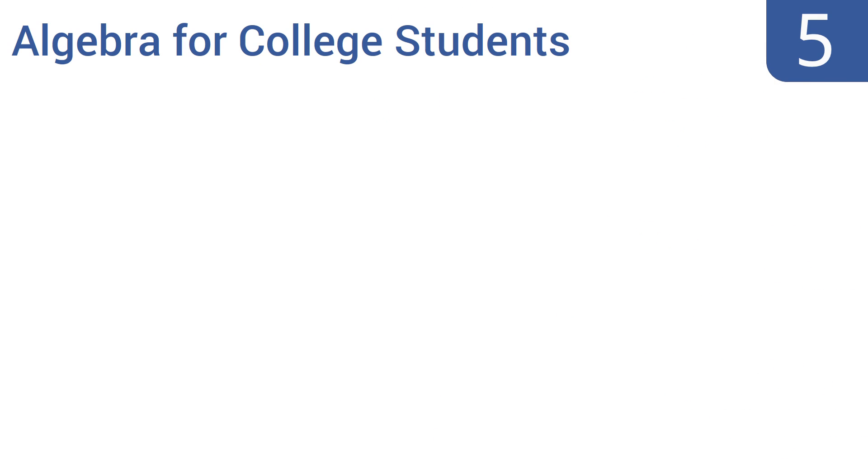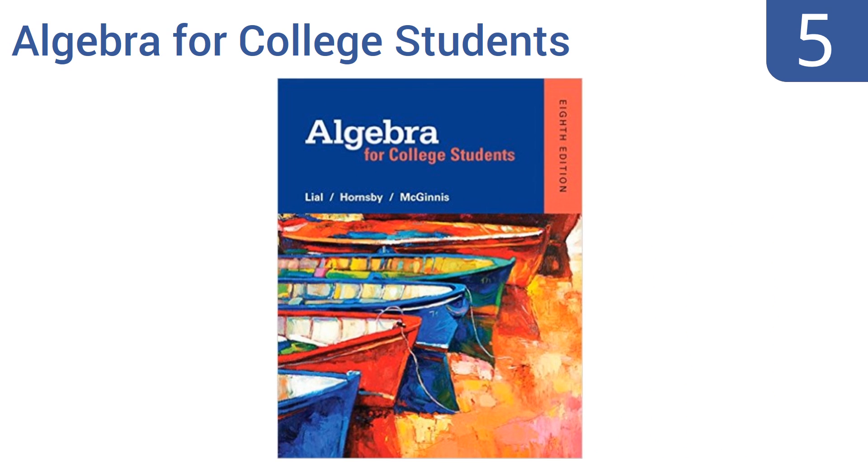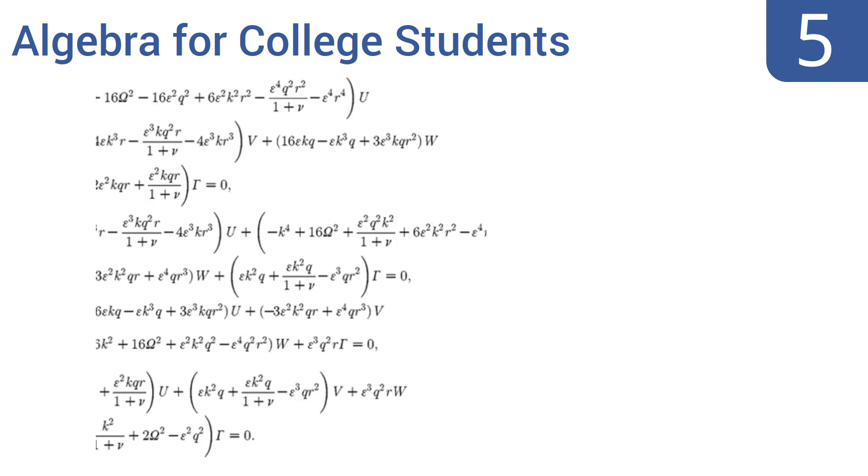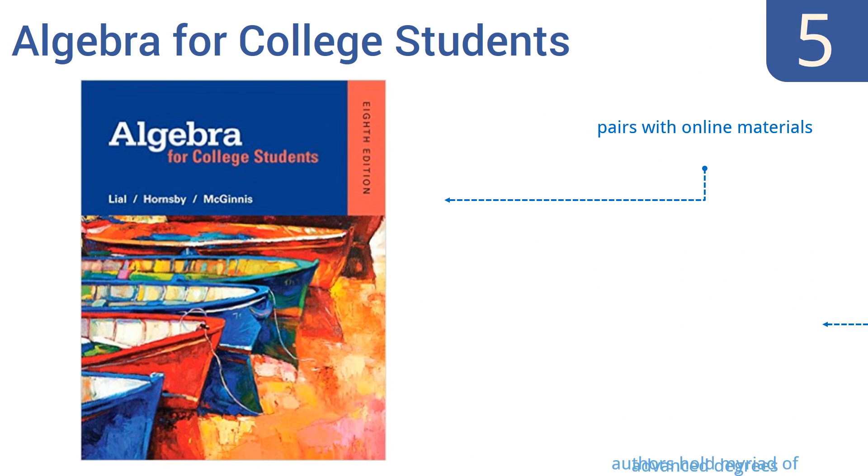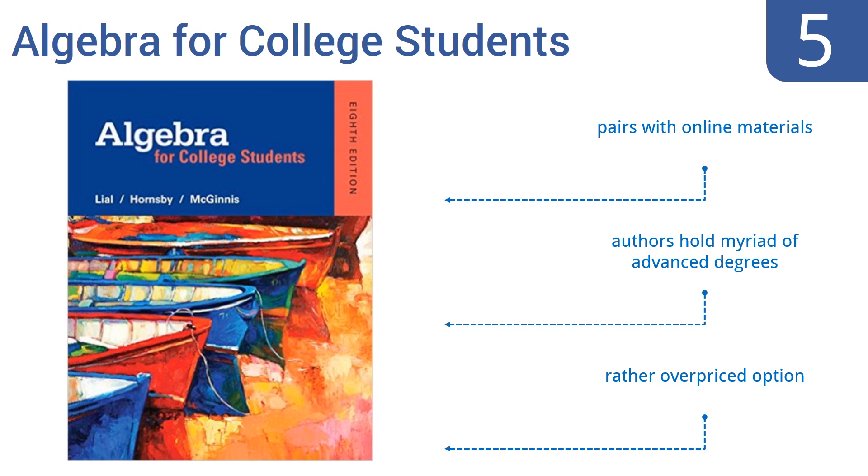Coming in at number 5 on our list, it will come as no surprise that the textbook Algebra for College Students 8th edition takes its user on a path through the more advanced levels of algebraic studies, though it also covers the basic building blocks of the discipline, such as variables and functions.